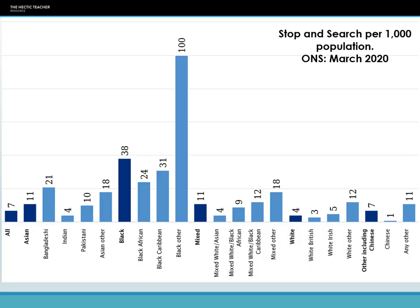Looking at stop and search data, seven out of every thousand people in the British population are stopped and searched per year. To put that in context, out of Wyndham College's population of around 2,000, we'd expect 14 people stopped and searched annually. For Asians that jumps to 11 per thousand, for black ethnic groups it's 38 per thousand, mixed groups are 11, and white groups are only four per thousand.